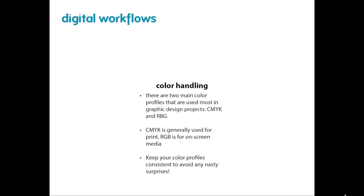Colors are really important in a digital environment. There are two main color profiles: CMYK, generally used for print projects, and RGB, used for anything on a screen or internet that won't be printed. It's important to keep your color profiles consistent to avoid nasty surprises. If you're working with a CMYK file and bring in something from an RGB color space, that RGB color might translate differently when printed, because your screen can display both but the translation into CMYK can change it dramatically.